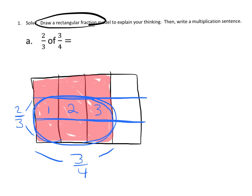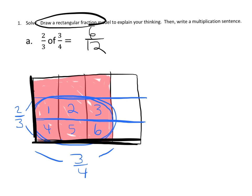So we've got 1, 2, 3, 4, 5, 6 units — 6 little fractional units out of a total of 12 fractional units, because we can see that there's 3 going up and down, there's 4 going across, so there's 12 total. And then we can use our simplifying — we can divide both the numerator and the denominator by 6, and that tells us that equals 1 half. And so 2 thirds of 3 fourths is 1 half.